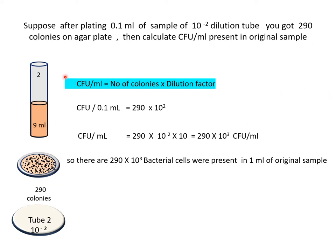We have to use the formula: colony forming units per ml is calculated by the number of colonies multiplied by the dilution factor. We have got around 290 colonies in 0.1 ml of sample plated on the agar plate, and the dilution factor of tube number 2 is 10 to the power 2.